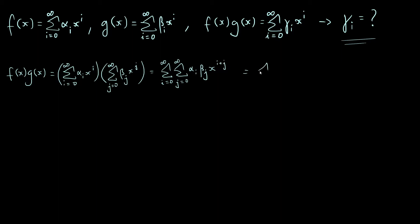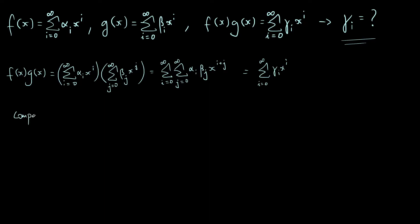Remember, that is supposed to be equal to the sum where i goes from 0 to infinity of γ_i·x^i. So we want to express the γ_i's in terms of the α's and β's, and the way to do that is by comparing coefficients.